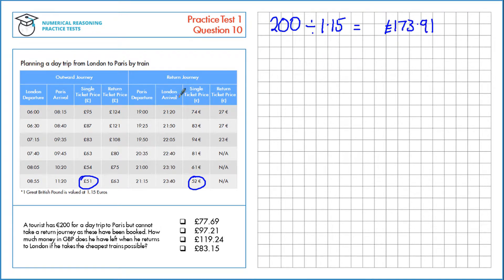Now that we've done that we can take away the single ticket price, £173.91, take away £51, which leaves us with £122.91.